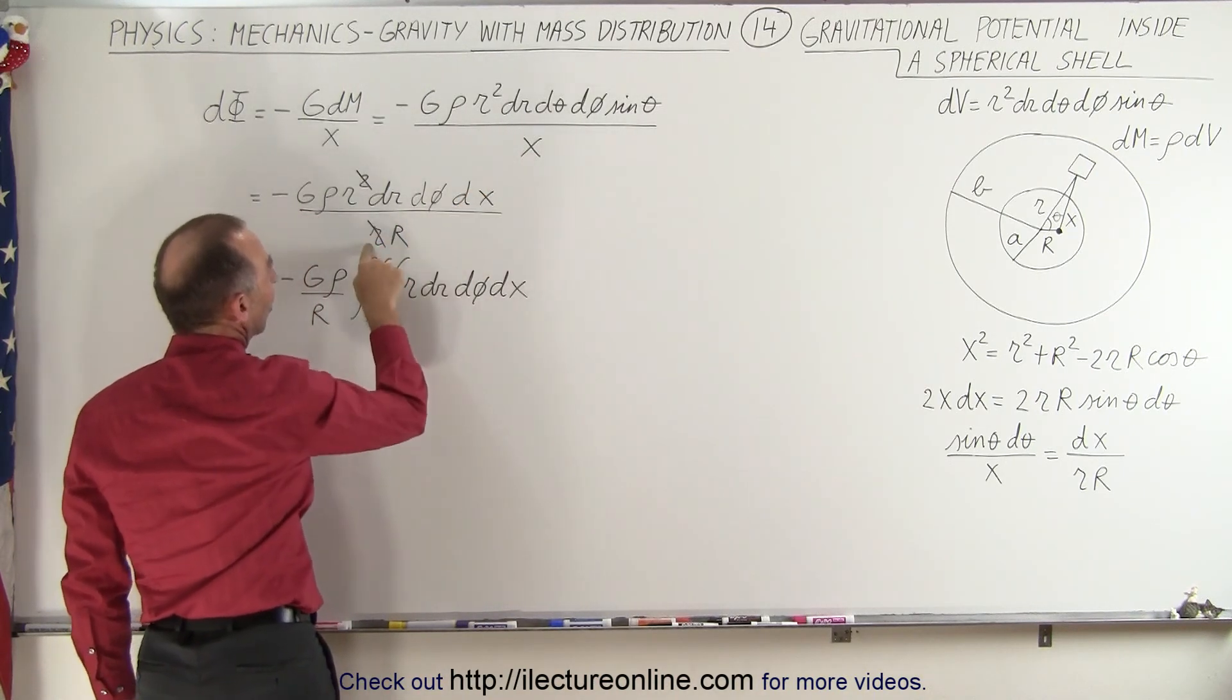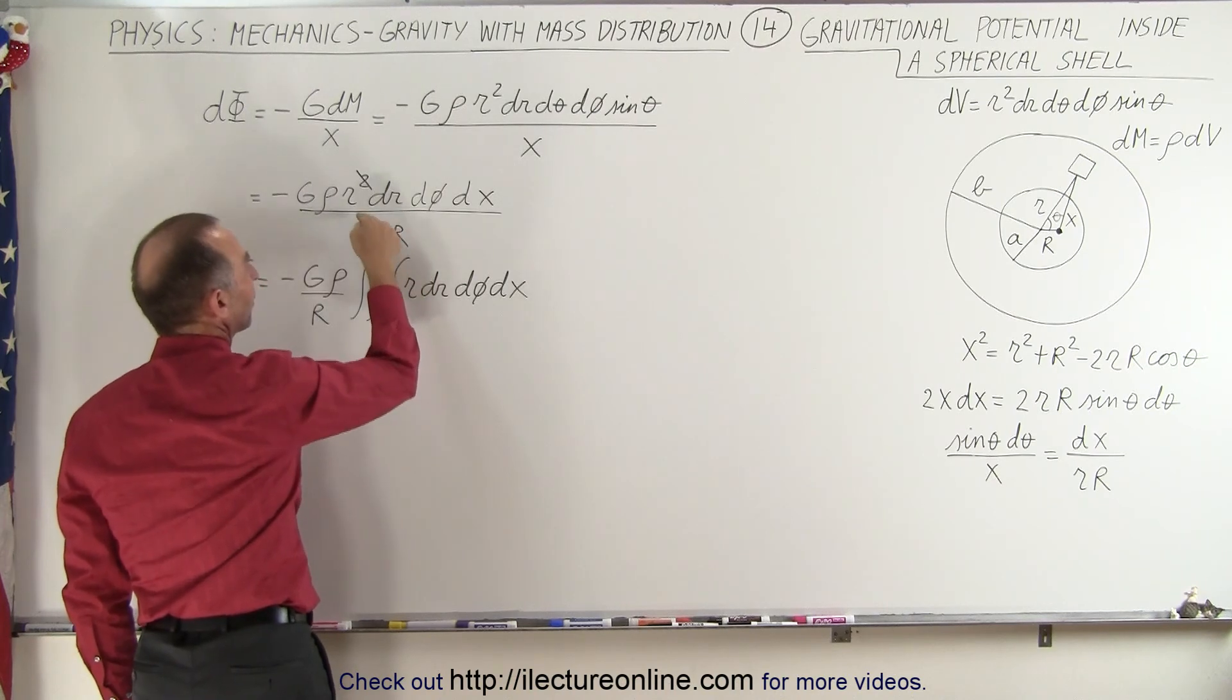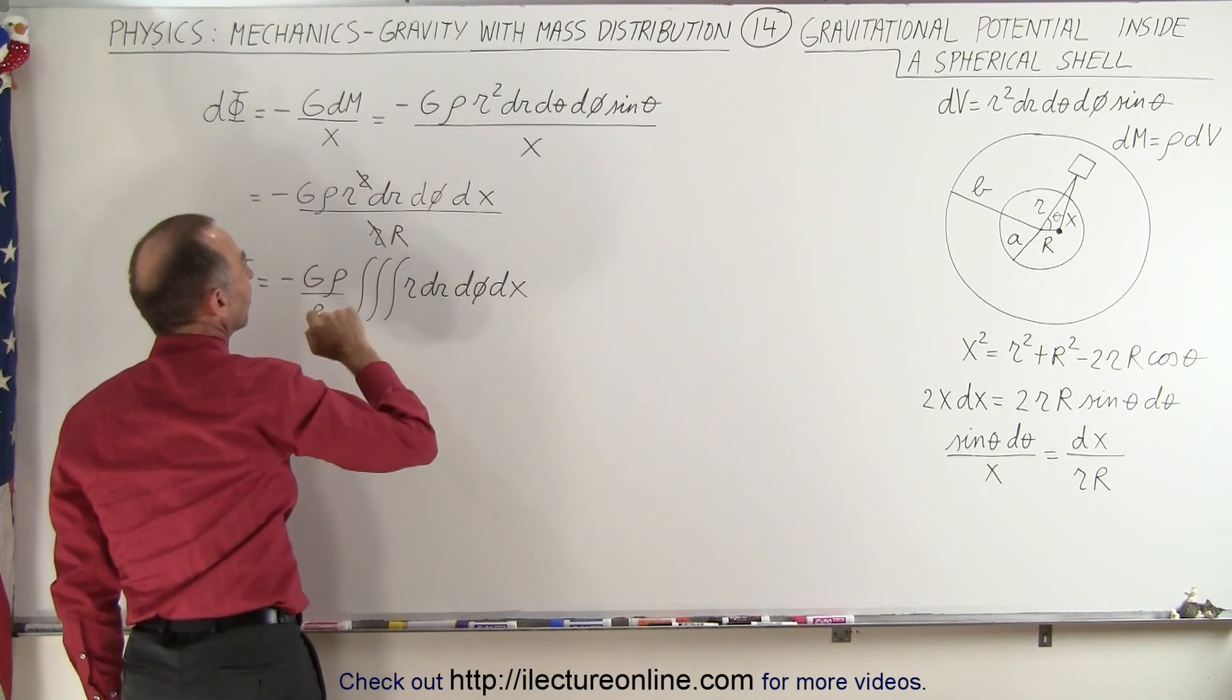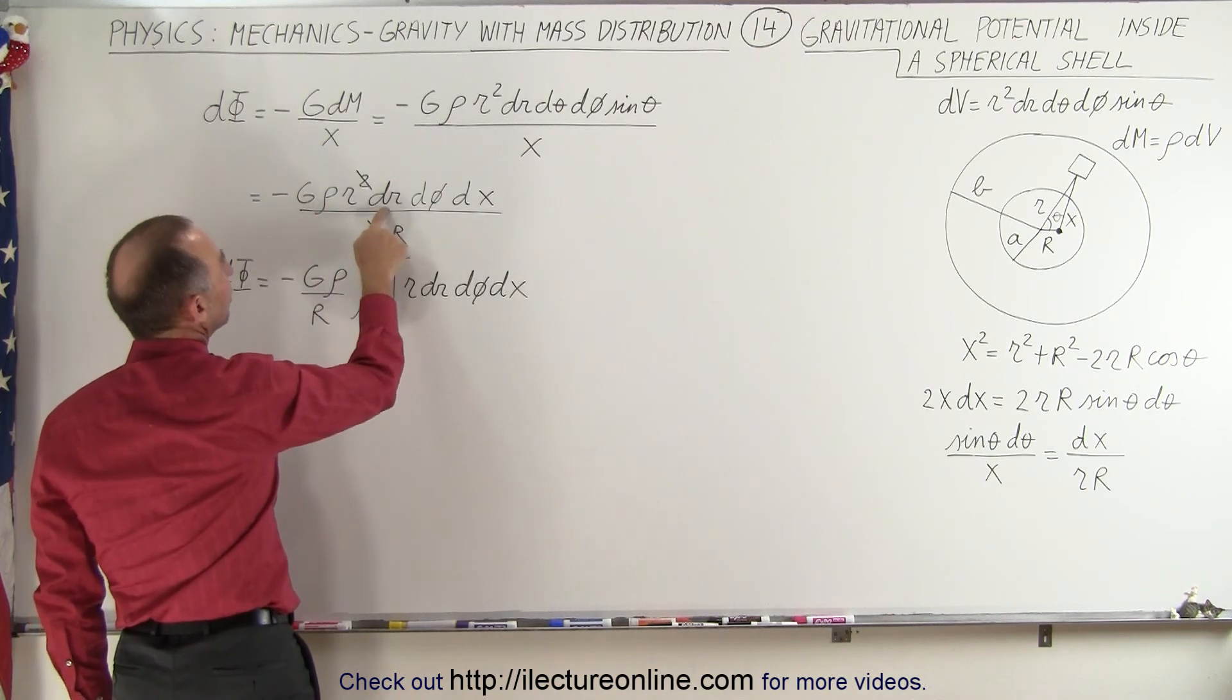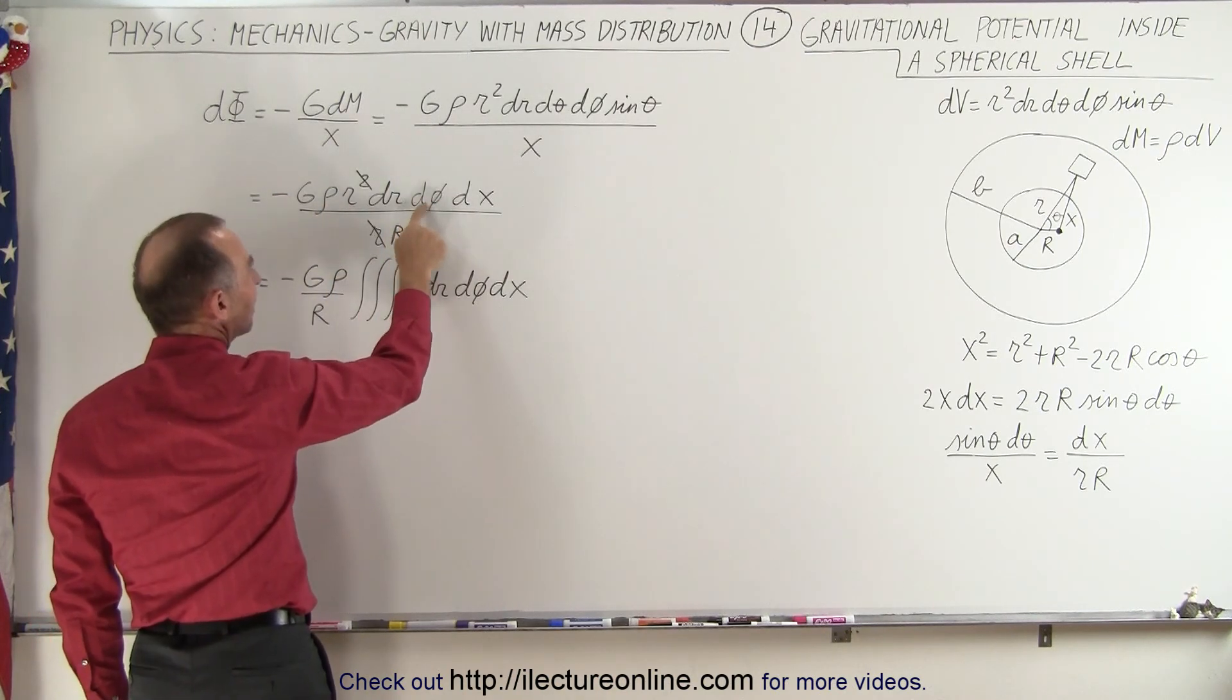dx in the numerator and an r times capital R in the denominator, but this r cancels out that r, so now we simply have minus g rho r dr d phi dx divided by capital R.